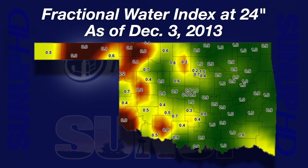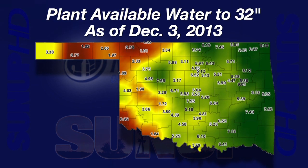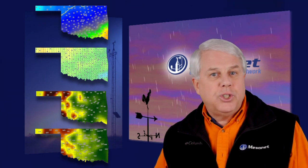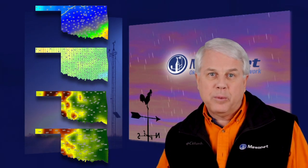Dropping down to the 24-inch depth, we see a lot more areas in the Panhandle and western Oklahoma that were short on deeper moisture. Those drier, deeper soils were a carryover of drought conditions that started way back in 2010. The lack of deeper soil moisture in some western Oklahoma soils shows up as low plant-available water amounts on a map from the surface down to 32 inches from December 3rd. While you enjoy all of December, we hope you and your family stay safe and warm. Thanks for joining us for this edition of the Mesonet Weather Report.